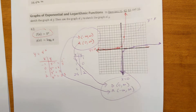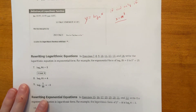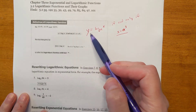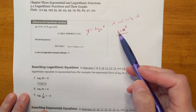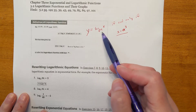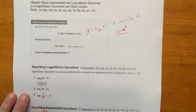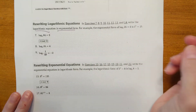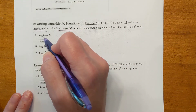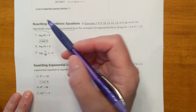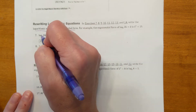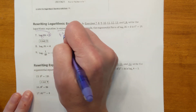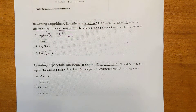Going back to page one: the definition of a log is from the inverse of an exponent. If you had x equals a to the y, it becomes y equals log base a of x. For the first example, rewrite the logarithmic equation in exponential form. Log base 4 of 64 equals 3 becomes 4 to the 3rd equals 64. And it checks out: 4 times 4 is 16, times 4 is 64.